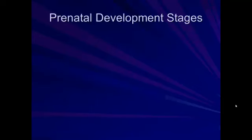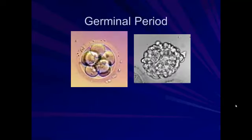There are three stages to the development process after fertilization. The first is called the germinal period. After we have the fertilized egg or the zygote, it basically starts dividing — that one cell turns into two, two into four, four into eight, and so on. We just have massive amounts of cell division, and this happens for the first probably eight to ten days after fertilization.